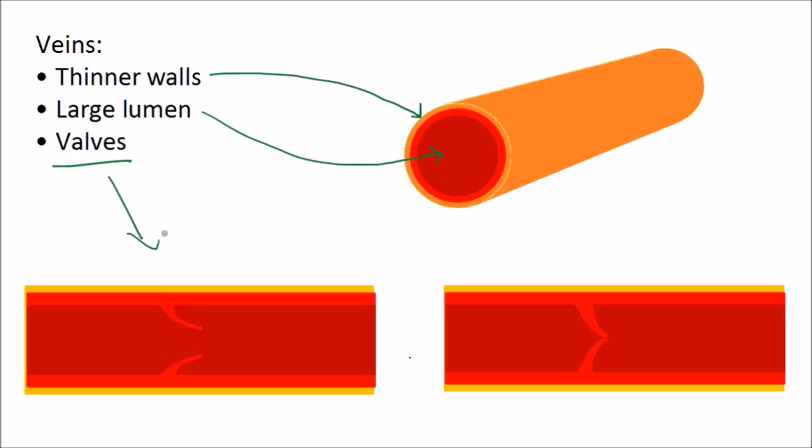So having a look at these two diagrams here, the diagram on the left shows the valves open, and if blood is flowing this way, the valves would allow the blood to flow in that direction. They would be in the open position. However, if blood tried to flow the opposite way, the valves would shut and the blood would not be able to flow backwards.